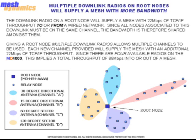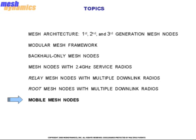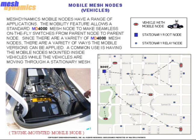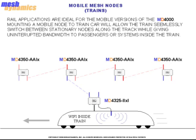Next topic to be covered: mobile mesh nodes. Mesh Dynamics mobile nodes have a range of applications. The mobility feature allows a standard MD-4000 mesh node to make seamless on-the-fly switches from parent node to parent node. Since there are a variety of MD-4000 mesh nodes, there are a variety of ways the mobile versions can be applied. A common use is having mobile nodes mounted inside vehicles while the vehicles are moving through a stationary mesh. Rail applications are also ideal — mounting a mobile node to a train car allows the train to seamlessly switch between stationary nodes along the track while giving uninterrupted bandwidth to passengers or systems inside the train.